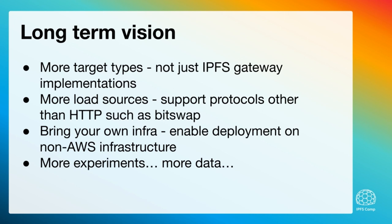We also want to decouple from AWS. Currently we rely on a couple of AWS components — we use ECS for our container system and we're using queue services. We want to be able to allow this infrastructure to be deployed anywhere so that anyone can quickly run up a test of their own software, our software, or whatever they want to do. And of course, we want to do more experiments, collect more data, and understand IPFS infrastructure in a better way.